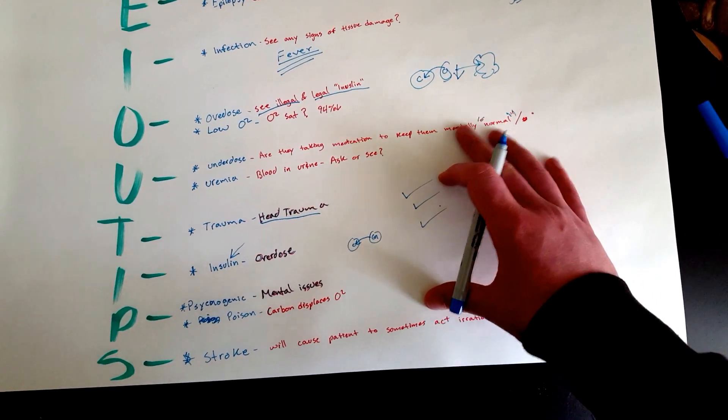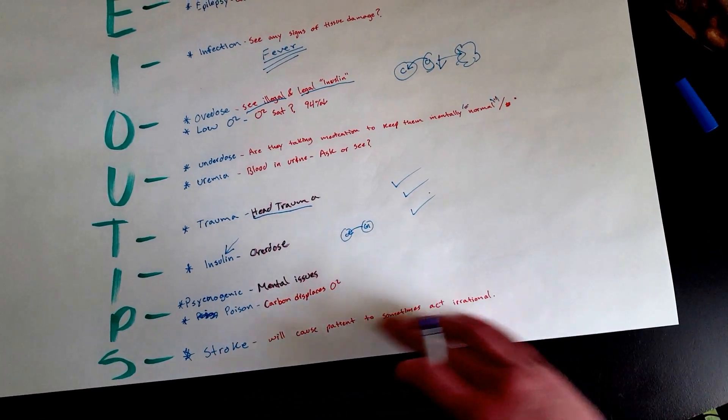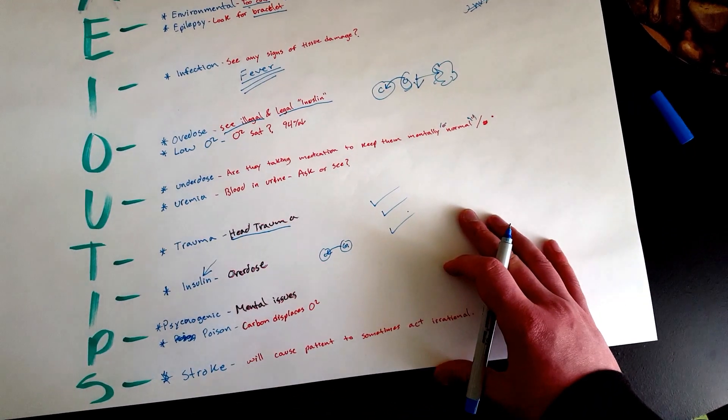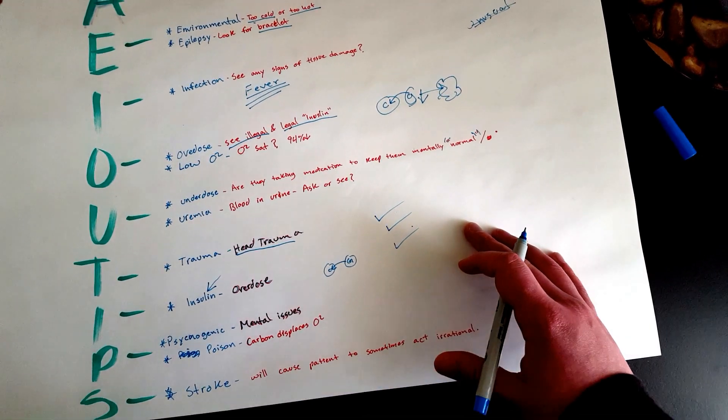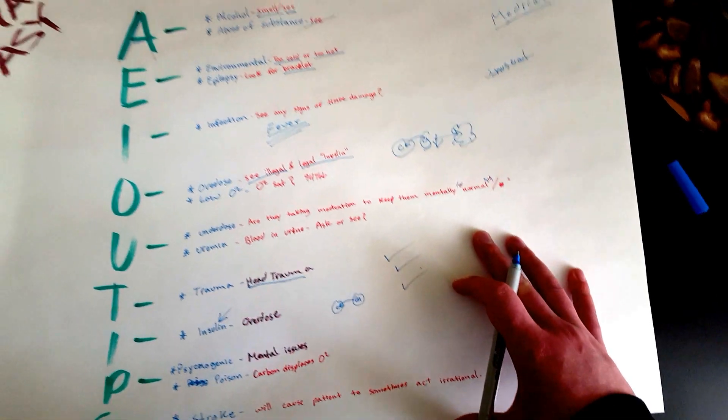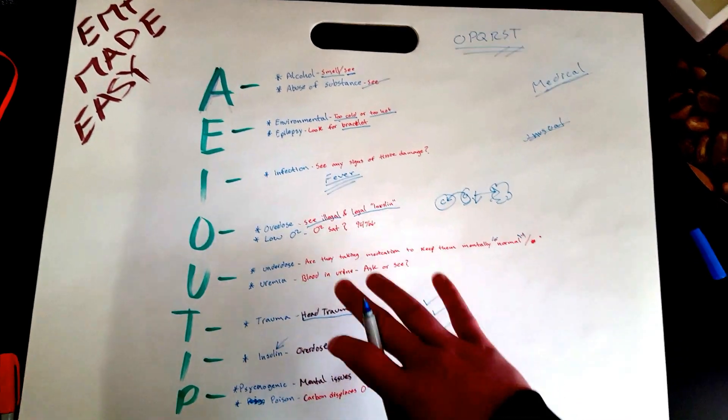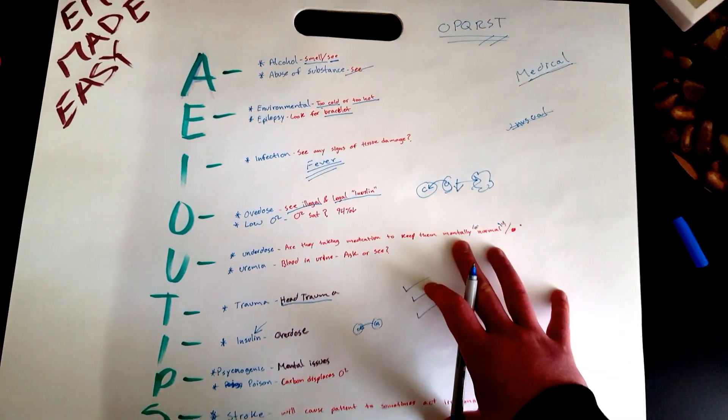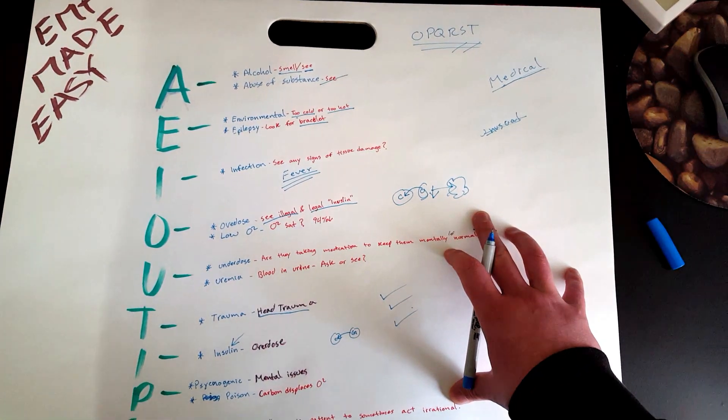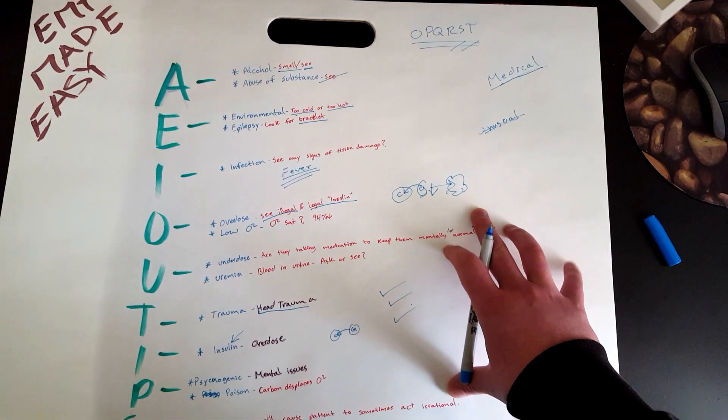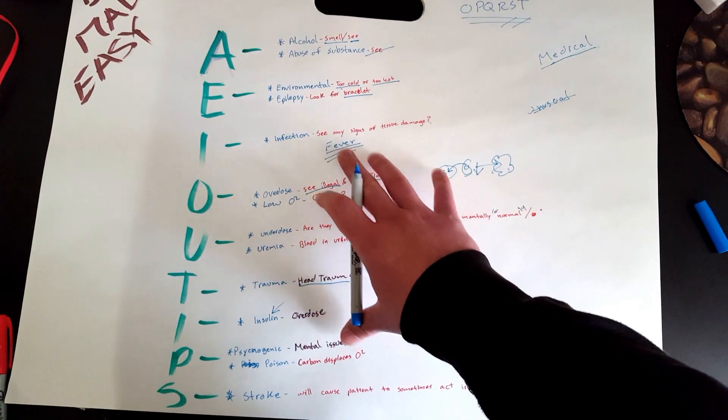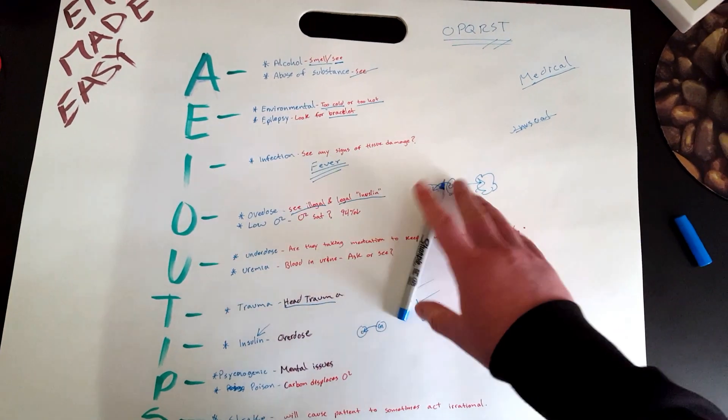And then for stroke, you can do your Cincinnati scale or whatever. There's other stroke skills that they teach, so I'm not sure where you are. Depending on what they teach you, use that. I hope this helped you guys out. This is for patients that are mentally altered, and it's a way of figuring out what's going on with your patient. See you guys next time. Bye.